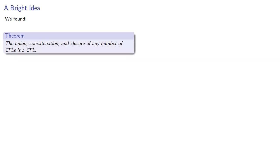We found that the union, concatenation, and closure of any number of context-free languages is a context-free language. This simplifies the task of finding a context-free grammar for any context-free language, because we could try to rewrite that language as a union, concatenation, or closure of CFLs.